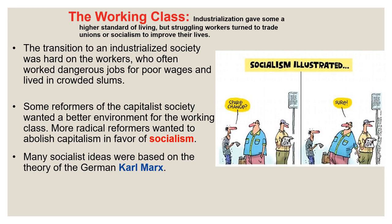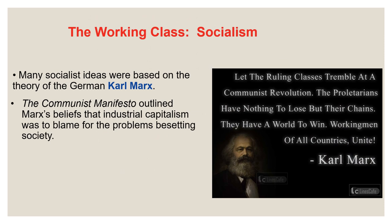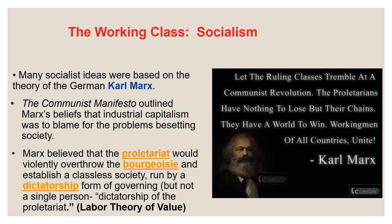The transition to an industrialized society was hard on workers — they often worked dangerous jobs for very poor wages and lived in crowded slums, largely due to laissez-faire economic policies. More radical reformers wanted to abolish capitalism altogether in favor of socialism. Many socialist ideas were based on the theory of German Karl Marx, who considered utopian socialist ideas too idealistic and saw his own as based on scientific reasoning. Marx and Frederick Engels wrote the Communist Manifesto, published in 1848. They outlined their belief that industrial capitalism was to blame for society's problems.